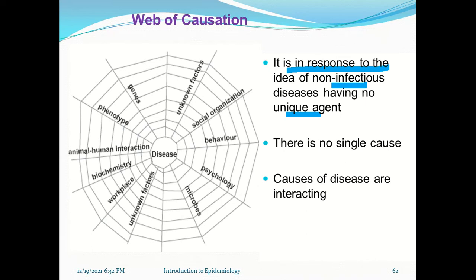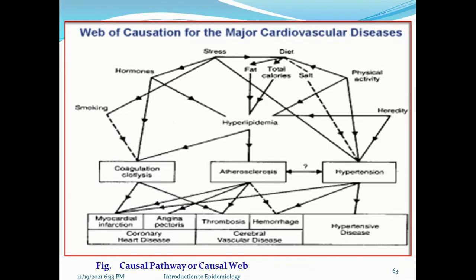In chronic disease there is no single cause — causes are interacting. A disease may have multiple causes such as social organization, behavior, psychology, microbes, unknown factors, workplace conditions, biochemistry, animal-human interaction, phenotype, and genes. All these are considered as the web of causation.